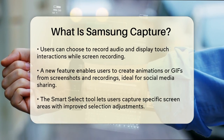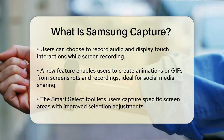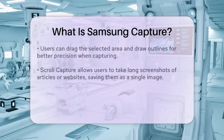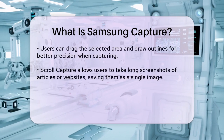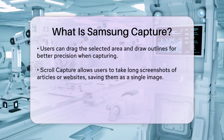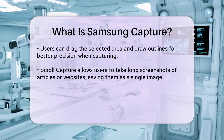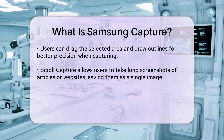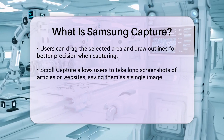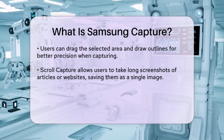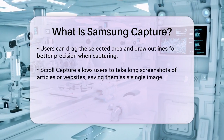The app also includes a Smart Select tool, which lets you capture specific parts of the screen. This tool has been improved in recent updates, making it easier to adjust your selections. You can now drag the selected area to reposition it and even draw an outline around the area you want to select, giving you more flexibility in how you make your selections.